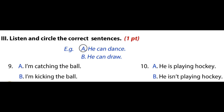Number six: he can dance — the correct answer is A. Now you listen and circle the correct sentences. Number nine: I'm catching the ball. Number ten: he isn't playing hockey.